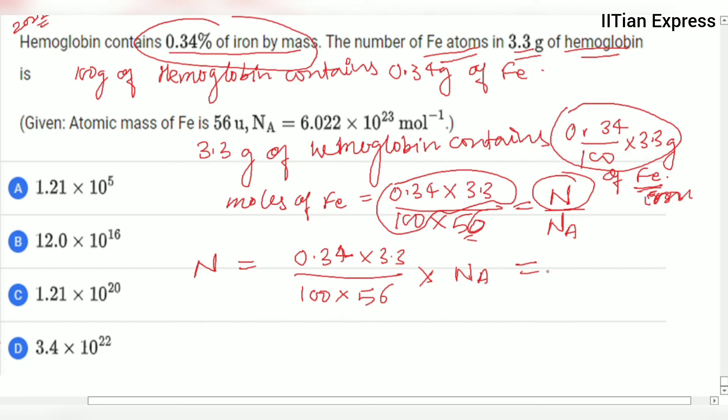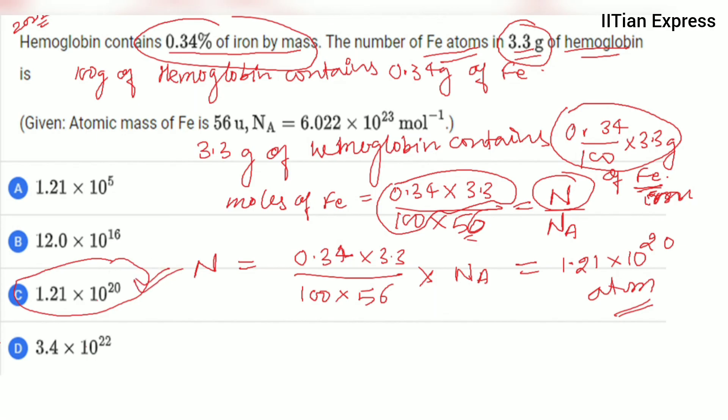After putting the value of Avogadro's number, we are going to get 1.21 into 10 raised to 20 atoms. So this much of atoms is there in 3.3 grams of hemoglobin. According to this, option C is the correct one. Hope you got the answer, thanks for watching and have a good day.